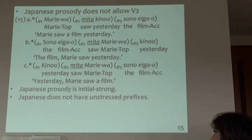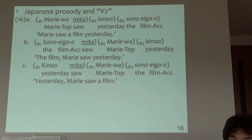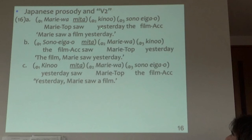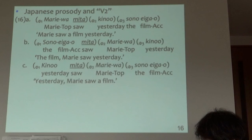Japanese does not have unstressed prefixes. Actually, Japanese may have something like V2 — it's a kind of inversion: 'Marie wa mita ki no sono eiga o.' This is called inversion, but for me it's another way to externalize the structure. 'Marie wa mita' — this is weak-strong, which is fine. 'Ki no' is strong, which is fine. So there's nothing wrong prosodically. It's okay in Japanese — it's a kind of V2.